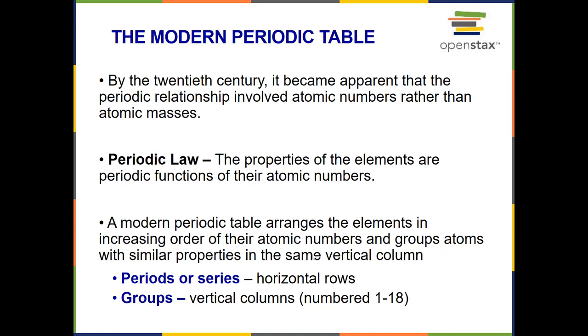On the modern periodic table, there are arrangements of atoms in increasing order of their atomic numbers. And atoms with similar properties are grouped in the same vertical column. So it's arranged in a series of horizontal rows of increasing atomic number. But down each group in a vertical column, those elements have similar properties.